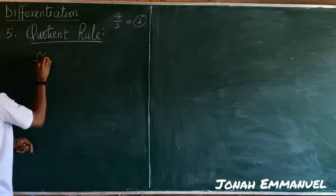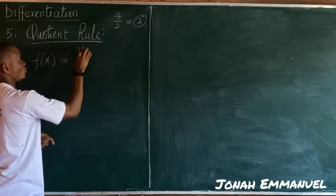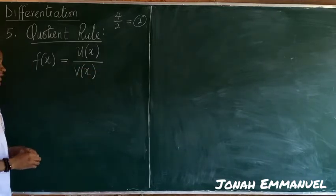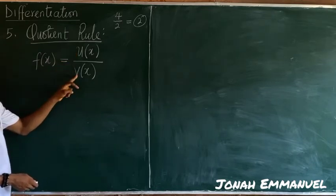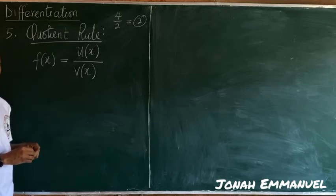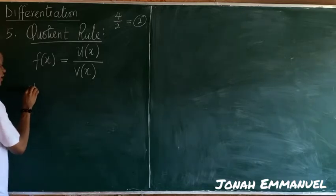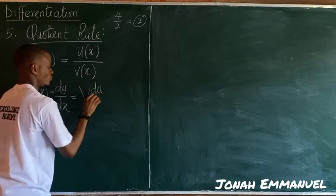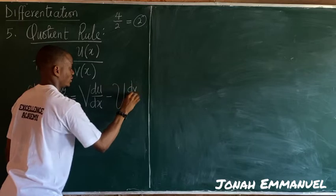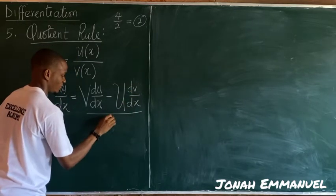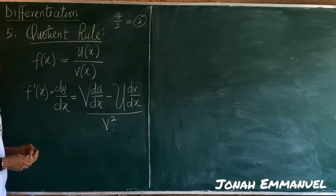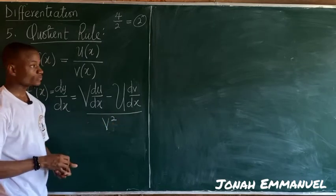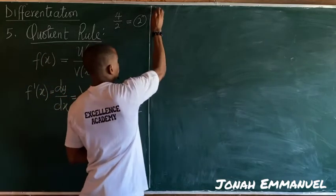From the quotient rule idea, if I'm given a function f(x) expressed as a function u with respect to x all over a function v with respect to x — u(x) all over v(x) — this becomes a quotient rule situation because u(x) is dividing v(x). The formula for quotient rule is: f'(x), which equals dy/dx, is equal to (v · du/dx minus u · dv/dx) all over v squared. This is the formula for differentiation using quotient rule.